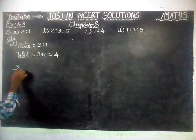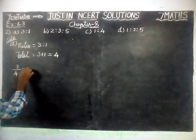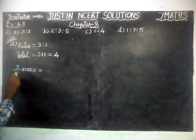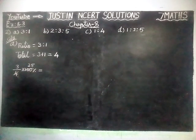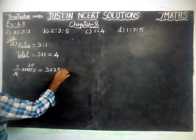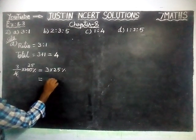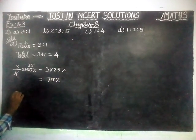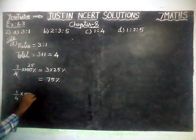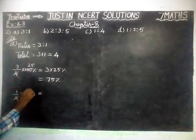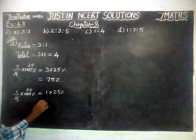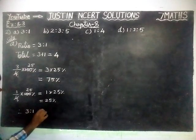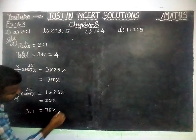Now we are going to find the first part: 3 divided by 4 into 100 percentage. We simplify — 25 fours are 100, so 3 into 25 percentage equals 75 percentage. For the next part: 1 divided by 4 into 100 percentage — 25 fours are 100, so 1 into 25 equals 25 percentage. Therefore, ratio 3 is to 1 equals 75 percentage and 25 percentage.